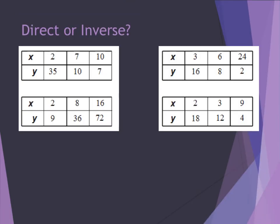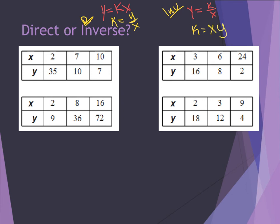For our final example, we need to tell whether each set of data is direct or inverse variation. For direct variation, y equals kx, so k equals y divided by x. For inverse variation, y equals k divided by x, so k equals x times y. If I get a consistent k value using one of these formulas across all data points in a table, that tells me whether it's direct or inverse variation.